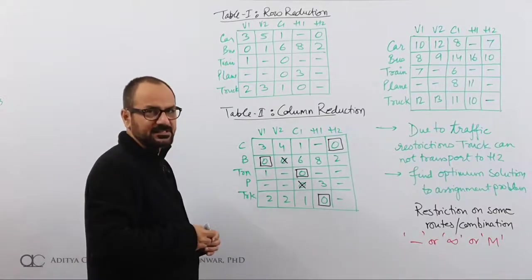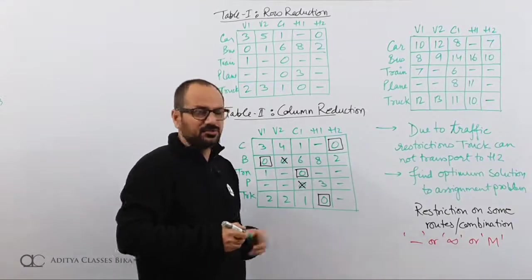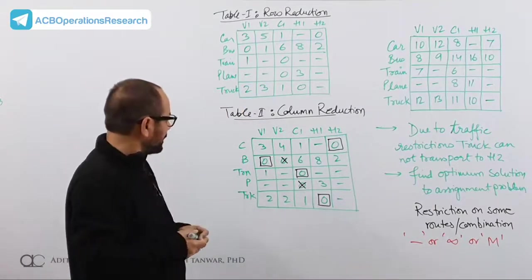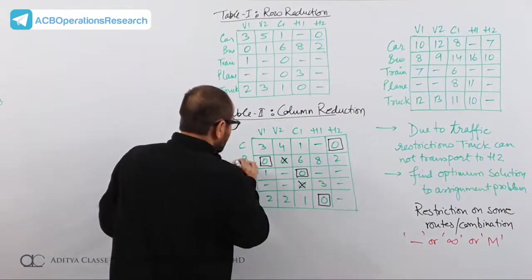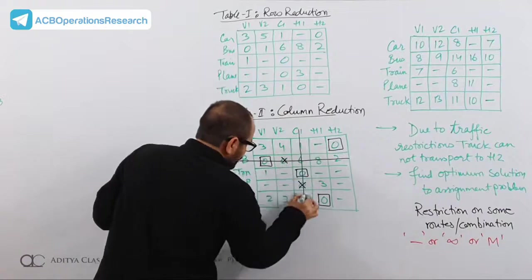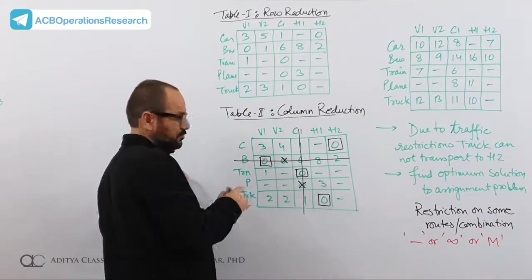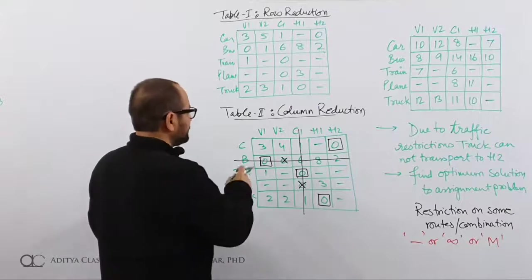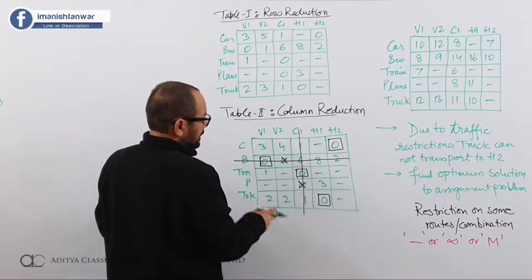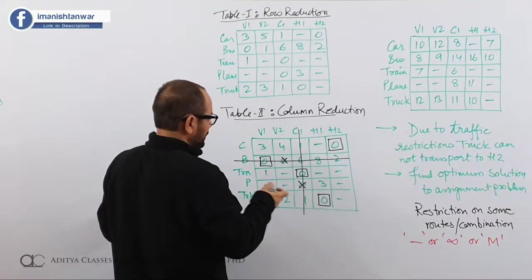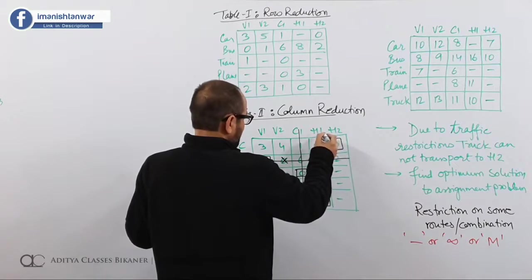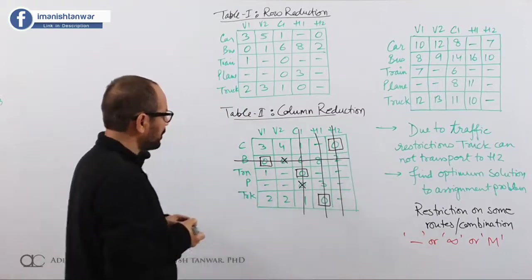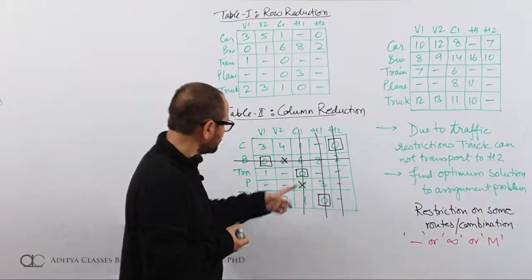In a 5×5 matrix, we have only 4 assignments — this is a situation of degeneracy. To resolve it, we cover all zeros using the minimum number of lines (horizontal or vertical), selecting lines that cover the maximum number of zeros. We use 4 lines: 1 horizontal, 1 vertical, and 2 more, covering all zeros.